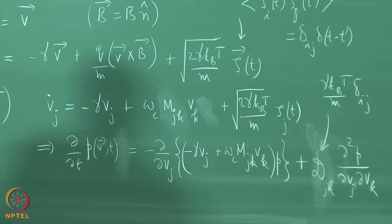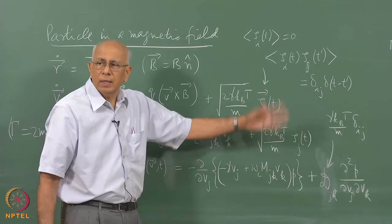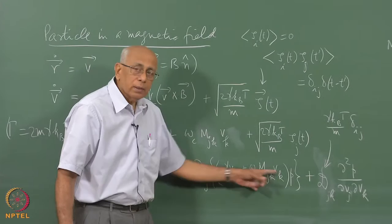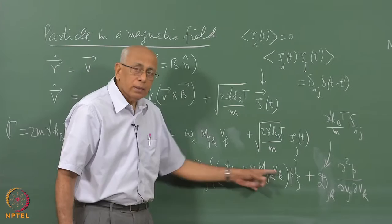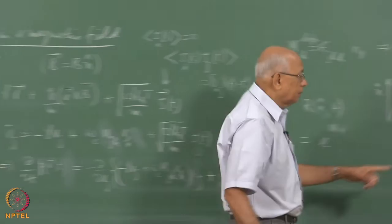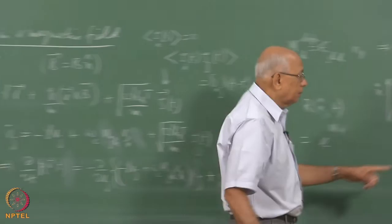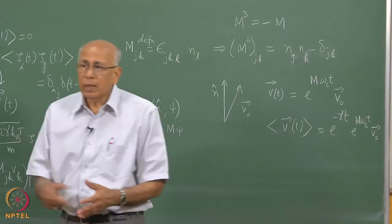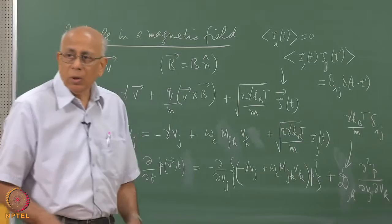Asymptotically, the velocity distribution goes to the Maxwellian. The solution is an Ornstein-Uhlenbeck distribution: proportional to exp(-(v - mean)² / (variance · (1 - e^(-2·gamma·t)))). The full 6-dimensional phase space density including position can also be written down; the 6×6 diffusion matrix is block diagonal with zeros in the position-position and position-velocity blocks, and D_jk in the velocity-velocity block.